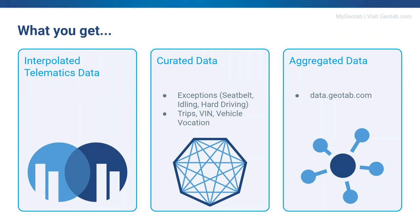For the curated data sets, we provide some default exceptions. These are not the exceptions from MyGeotab, but we've mimicked what you would see there. For seatbelt, idling, and harsh driving, we've created the same type of exceptions and put that data into your BigQuery project. If you want to change the metrics — what constitutes a seatbelt or idling infraction — we can give you the queries used to generate these exceptions so you can rerun and build your own. You have all the raw data, so you can really customize how you want this to work.